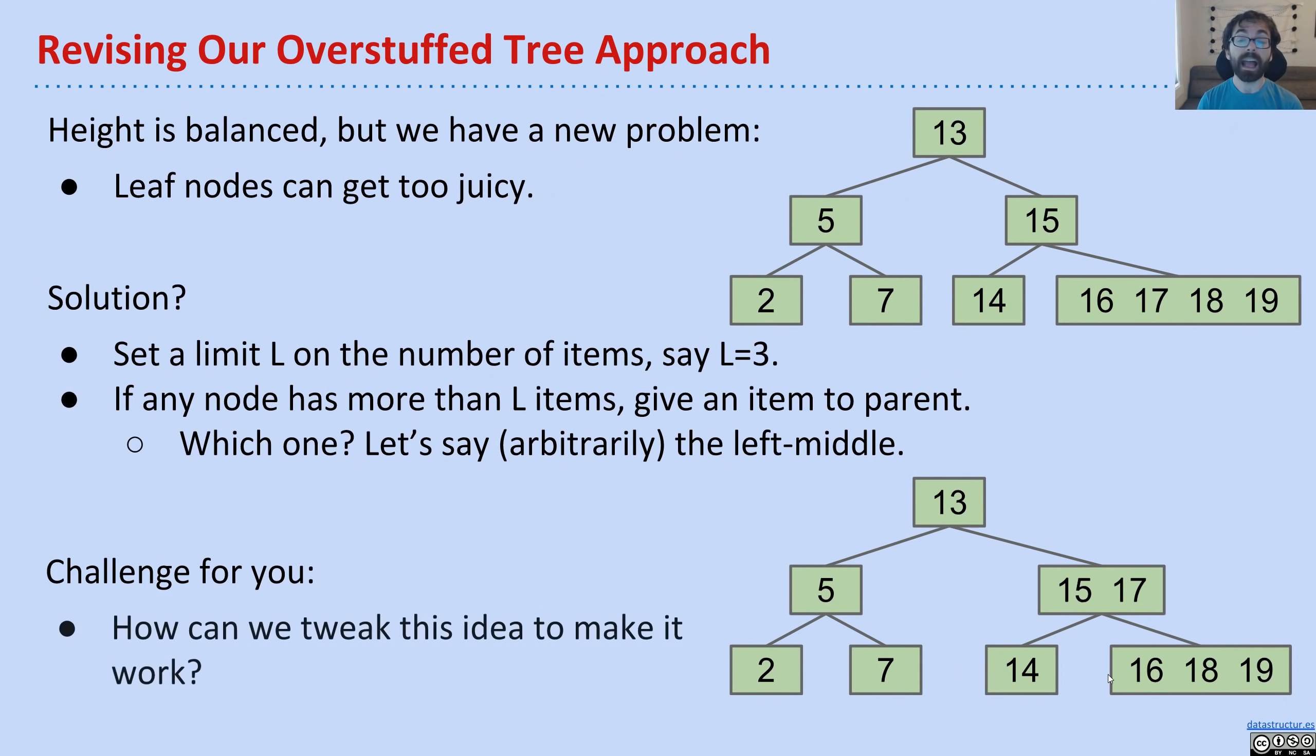My challenge for you is, how can we change this so that it works? So I still want you to keep the feature that we have a maximum, L equals 3. And I want you to keep the feature that we're going to pass the middle left item up. But now I want you to do one more different thing. I want you to tweak this idea so it's even better.